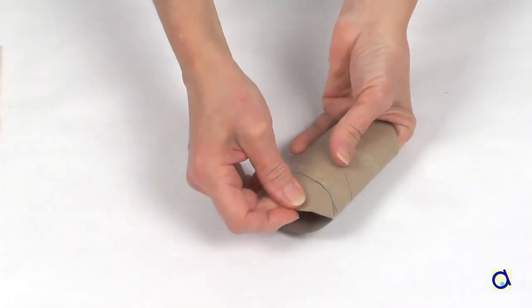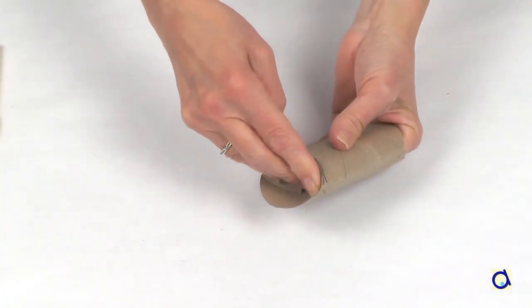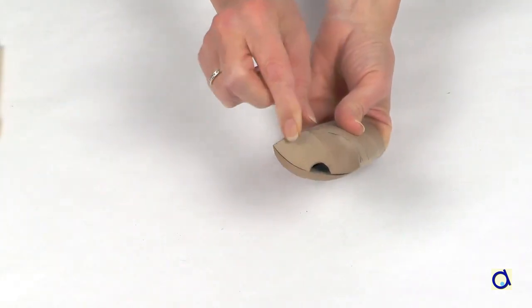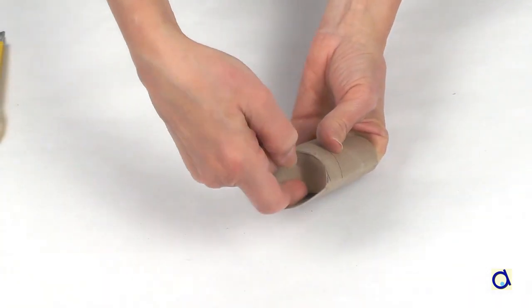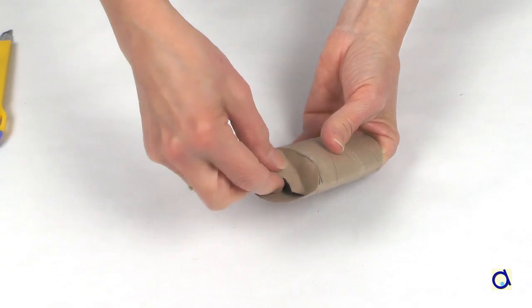Squeeze the sides of the roll to give it some volume and fold both flaps with the notches. The notches will make it easier to open these sides later.